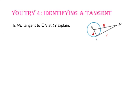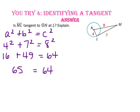Pause the video and do you-try number 4. Is segment ML tangent to circle N at point L? Explain. If a segment is tangent to a circle, it will be perpendicular to the circle's radius, giving us a right triangle with a 90 degree angle. So if 4 squared plus 7 squared equals 8 squared, segment ML will be tangent to circle N. Since 16 plus 49 equals 65 and does not equal 64, segment ML is not perpendicular to the radius of circle N. Therefore, segment ML is not tangent to circle N.